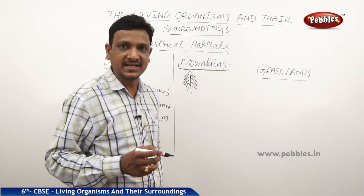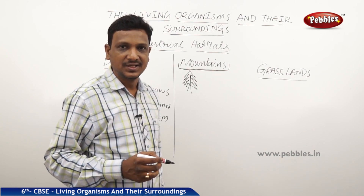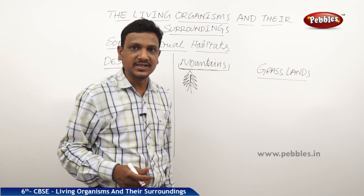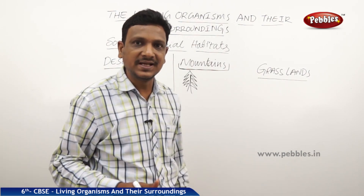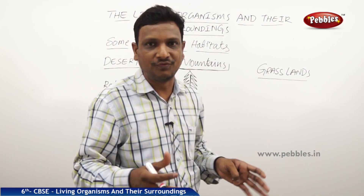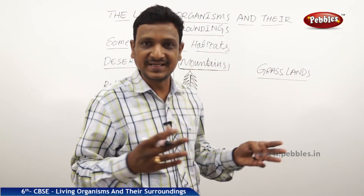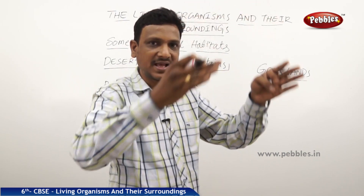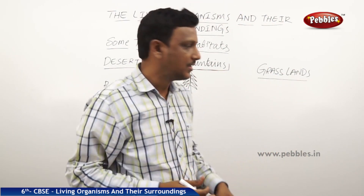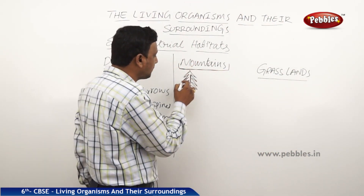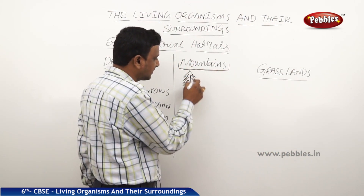If snow stays on the branches, the trees cannot breathe and they die. So whatever snow falls on the trees, it should easily slide off. When the tree is having a slope, the snow slides off. That is the reason they have slopey branches like this.